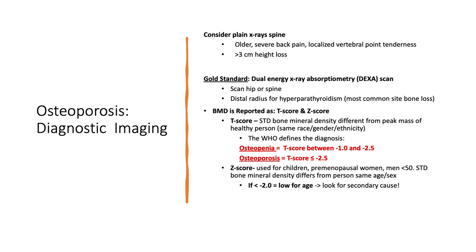Z-scores are generally used for children, premenopausal women, and men under 50. This is the standard deviation of bone mineral density compared to another person of the same age and sex. If a patient has more than 2 standard deviations away from the mean — particularly in this younger population — we really need to look at secondary causes of disease.